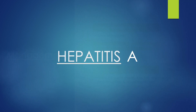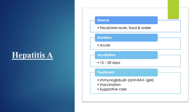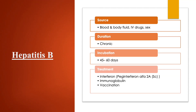Now we'll discuss the individual types of hepatitis. For hepatitis A, sources stem from the fecal-oral route as well as contaminated food and water. Hep A is an acute disorder and symptoms appear approximately 15 to 50 days after exposure. Treatment options include immunoglobulin therapy, vaccination — there is a hep A vaccine available — and supportive care.